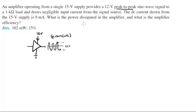So that being said, this is provided to a load of 1kΩ and draws negligible input current, so the input current is really small and is negligible from a signal source. The DC current drawn from the 15V supply is 8mA. What is the power dissipated in the amplifier and what is the amplifier efficiency?